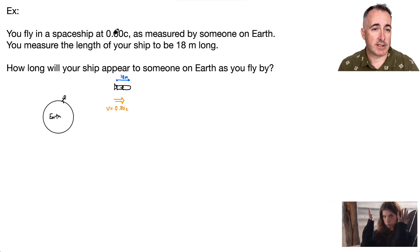So you're flying in a spaceship and you're going 80% the speed of light as measured by someone on Earth. Someone on Earth watches you zoom by at 0.8c. Now you measure the length of your ship to be 18 meters long. However, as you zoom by, you're going to appear to be different length and it should be shrunk, something less than 18.